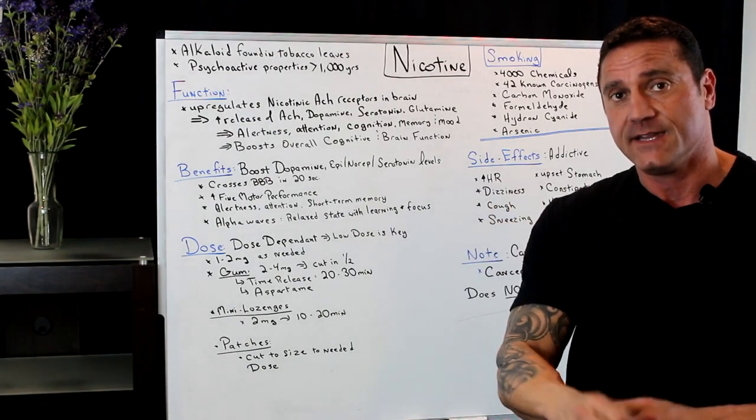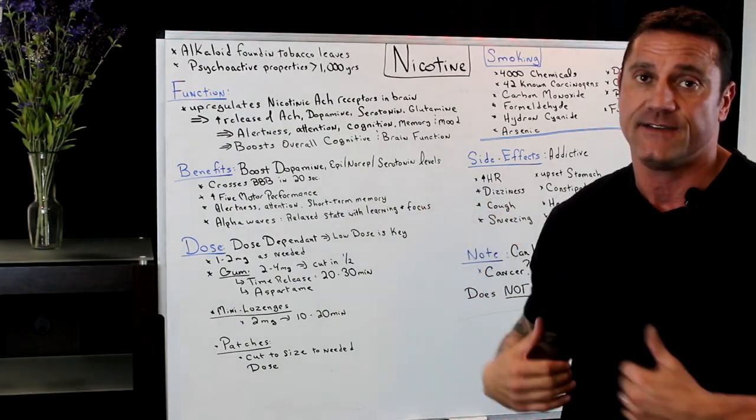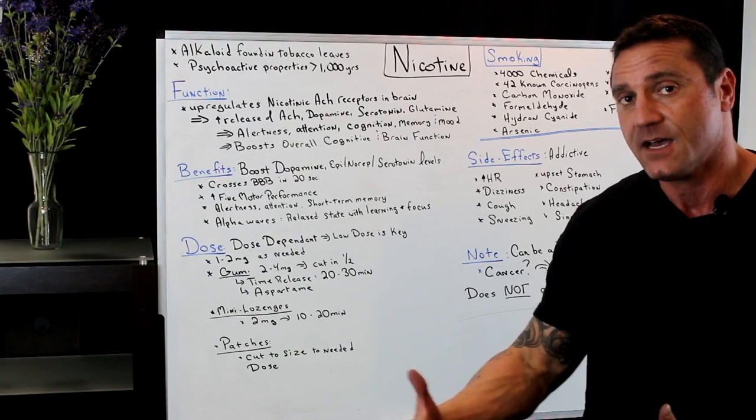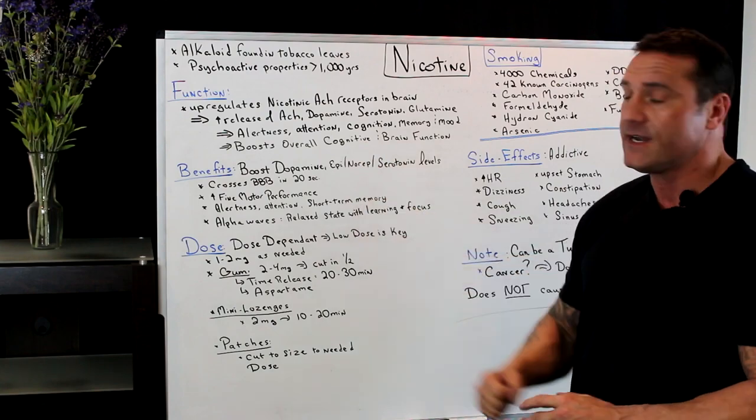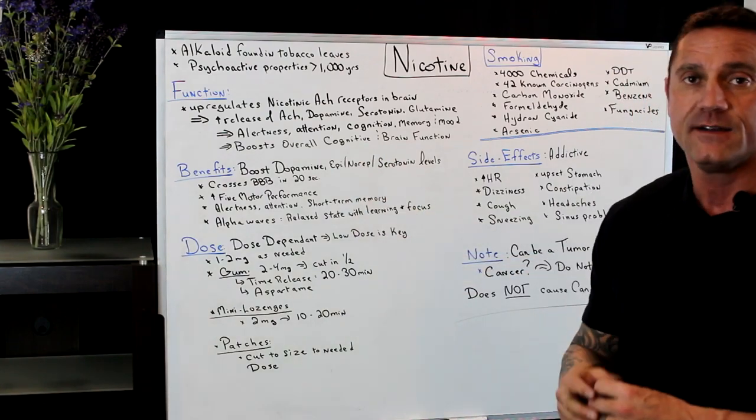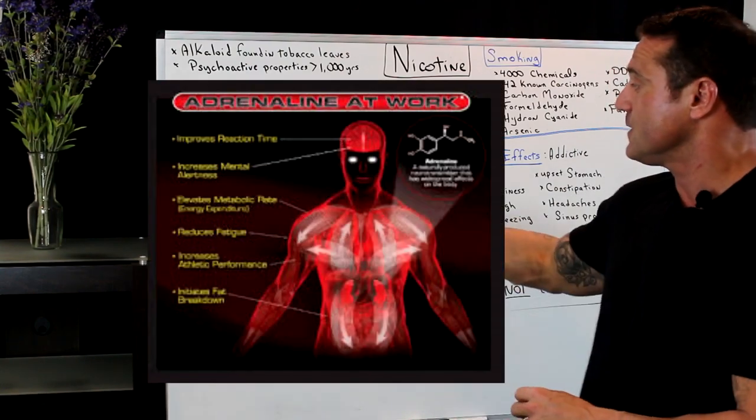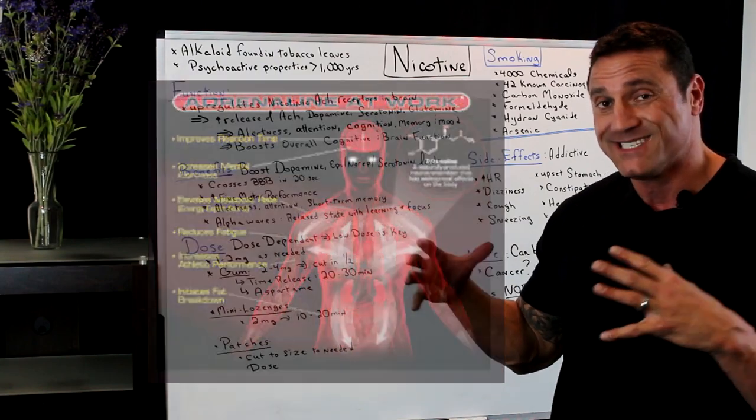But I want to talk about a supplement like a nicotine gum or how nicotine affects the body if you're taking it as a supplement. So the benefits of nicotine: it boosts the dopamine, norepinephrine, which is our adrenaline response, as well as our serotonin levels, which will help calm us down.